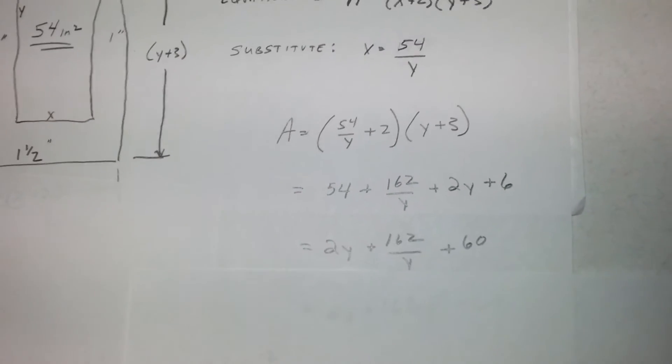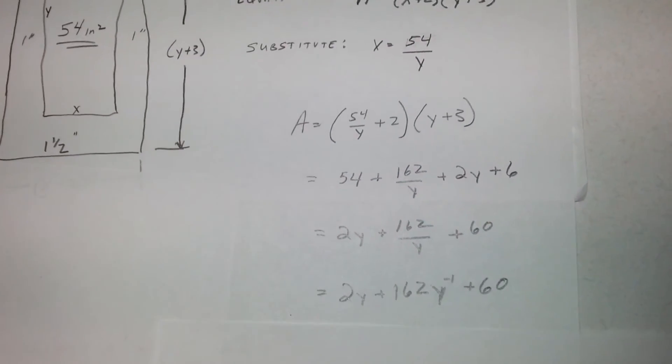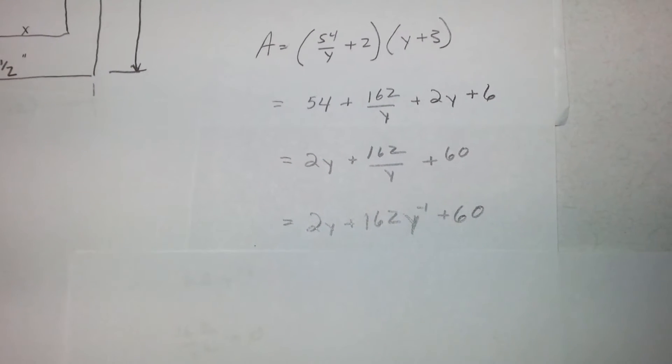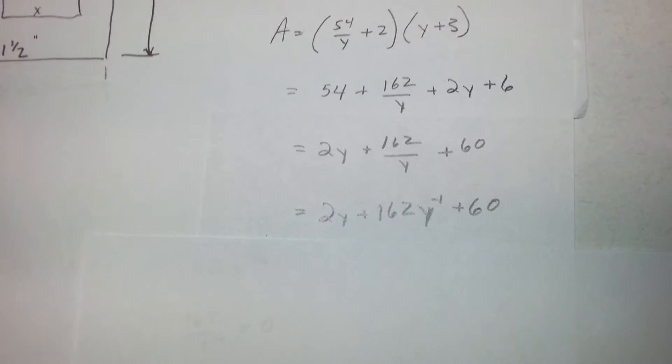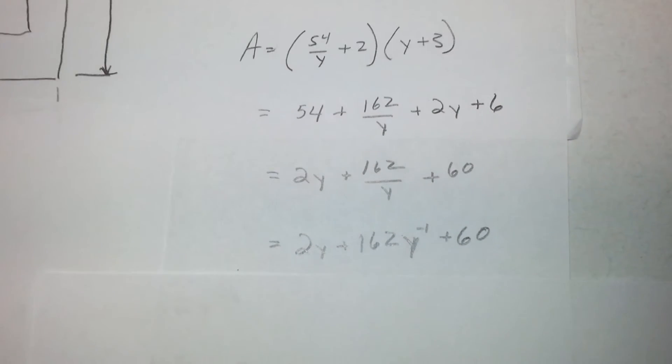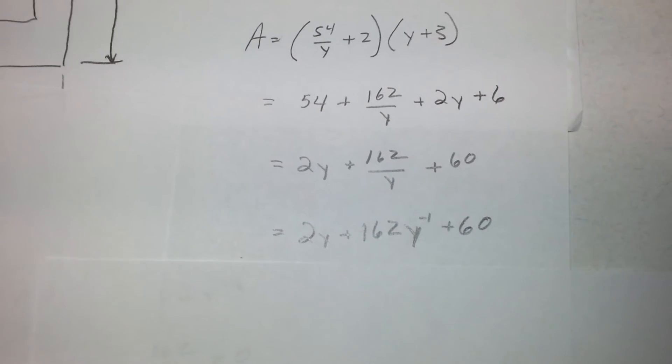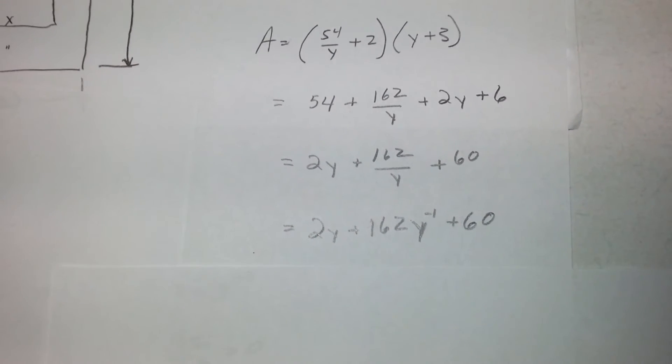So we have 54 over y plus two times y plus three. Do our foil. We come up with 2y plus 162y to the negative one plus 60 after we foil that all out.